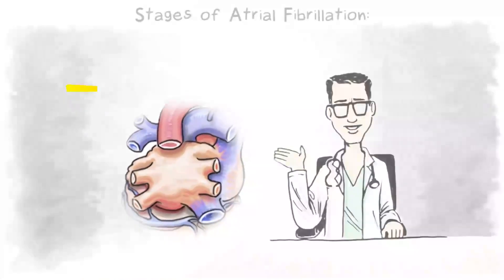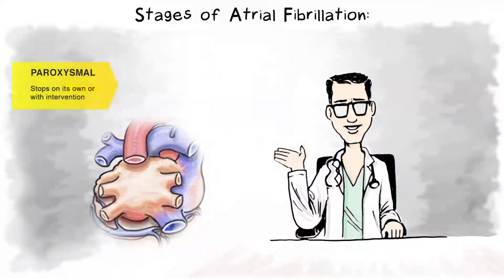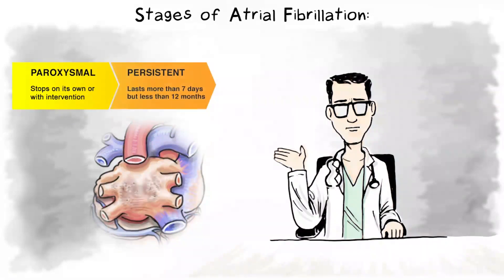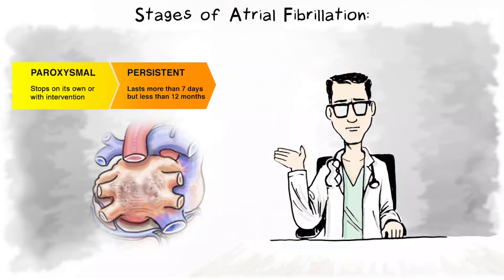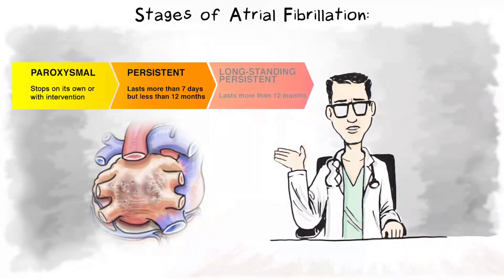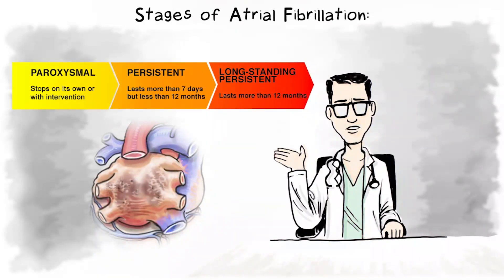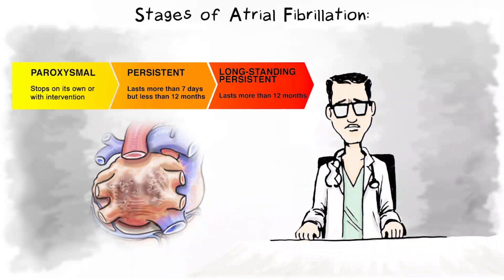Atrial fibrillation has several stages. Paroxysmal atrial fibrillation stops on its own or with intervention within seven days. If atrial fibrillation continues untreated, it can become advanced atrial fibrillation. Advanced atrial fibrillation includes persistent atrial fibrillation, which lasts beyond seven days, and long-standing persistent atrial fibrillation, which lasts more than one year. Over time, atrial fibrillation can harm the heart.